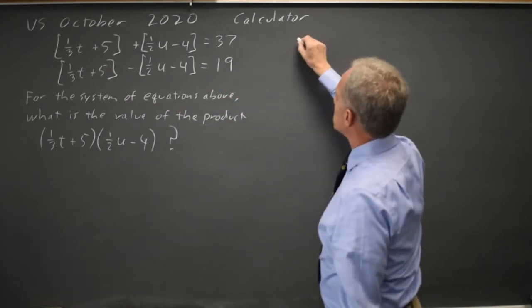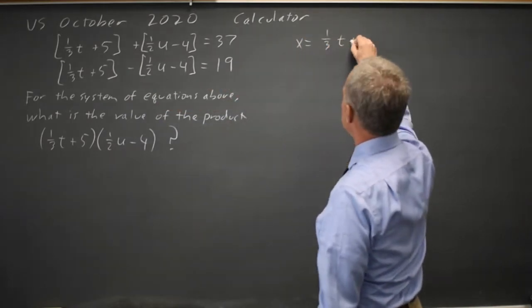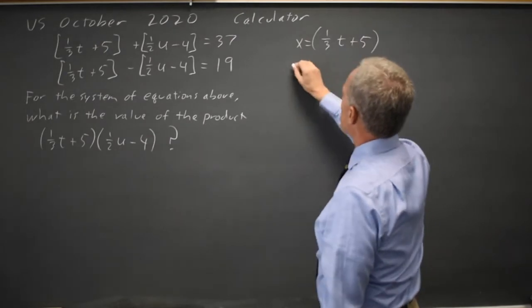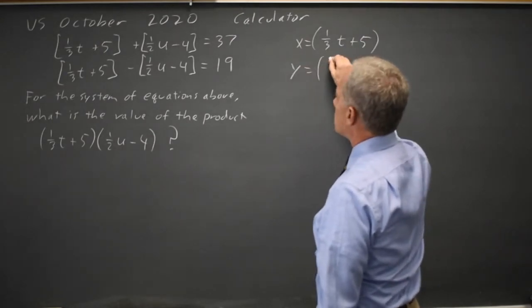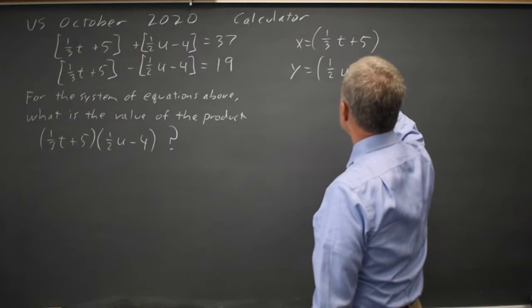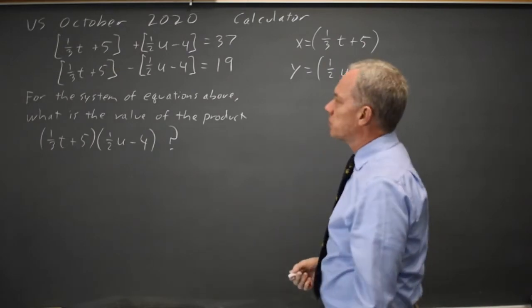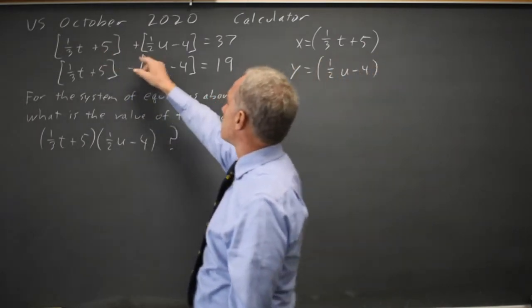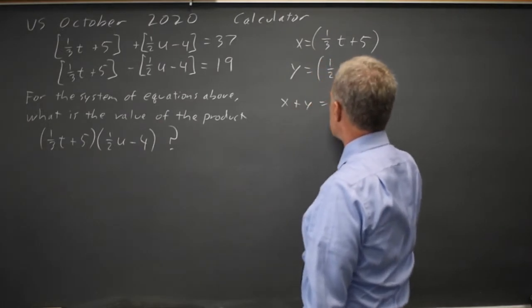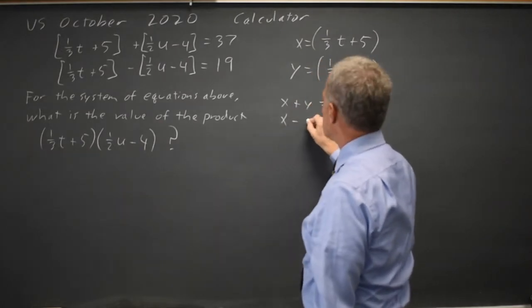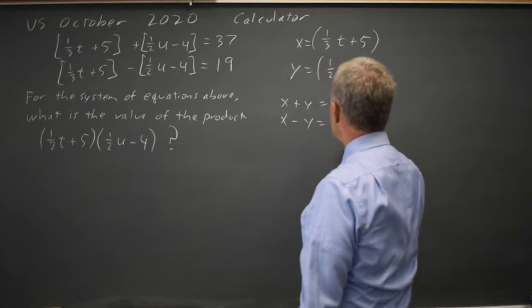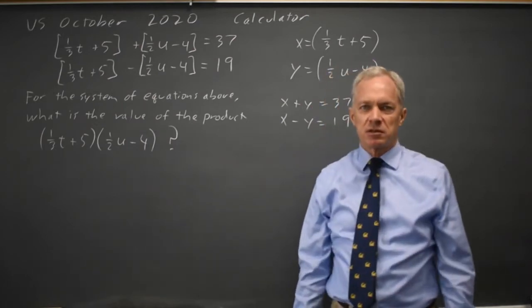So I'm going to write x equals 1 third t plus 5, and y equals 1 half u minus 4. And work with those, because that makes this x plus y equals 37, and x minus y equals 19. And this is much, much easier to work with.